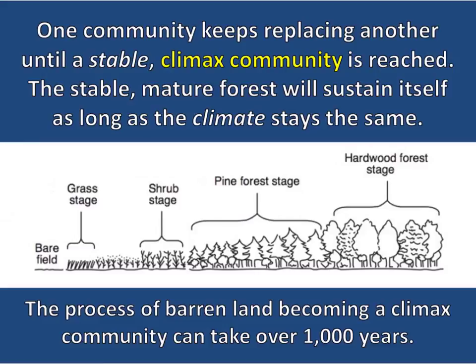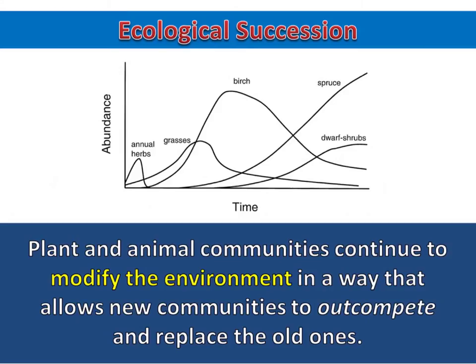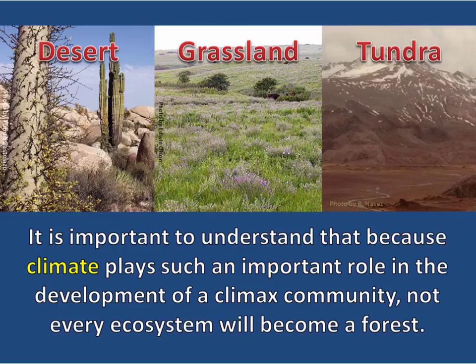The process of barren land becoming a climax community can take over one thousand years. Plant and animal communities continue to modify the environment in a way that allows new communities to outcompete and replace the old ones. It is important to understand that because climate plays such an important role in the development of a climax community, not every ecosystem will become a forest. Forests require plentiful rainfall and sunlight, and in a desert, grassland, or tundra, the climate simply will not support a forest community.